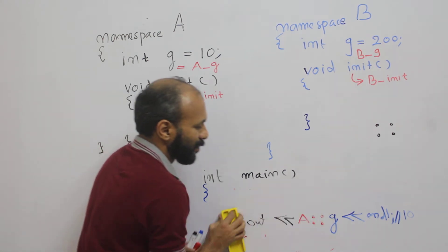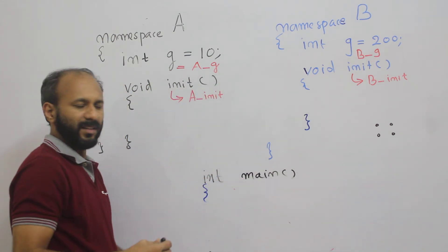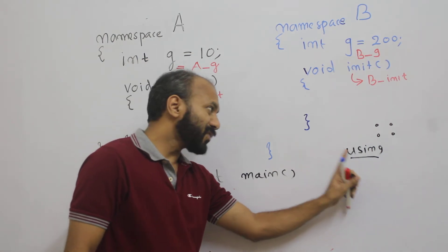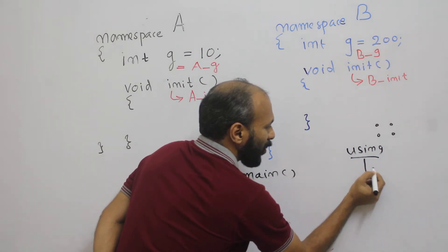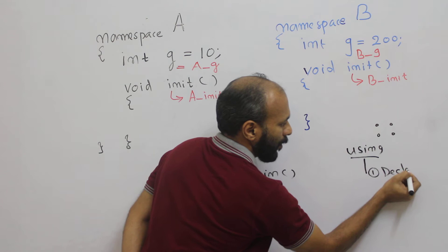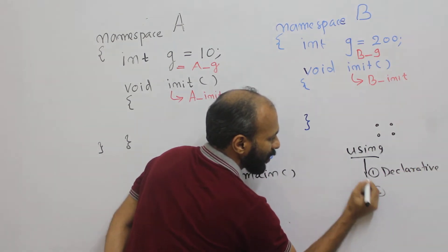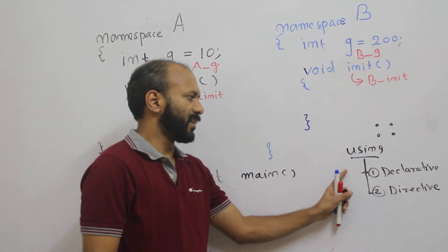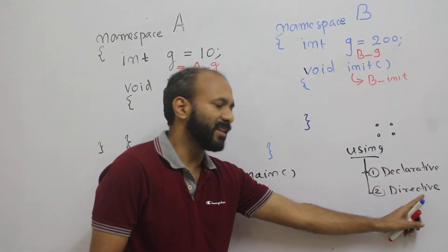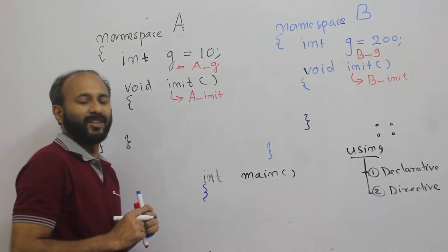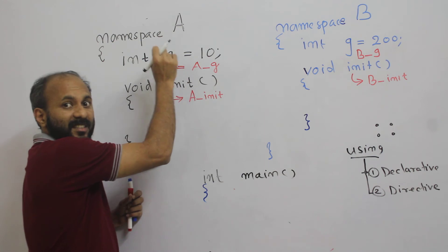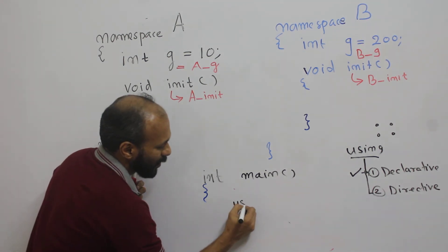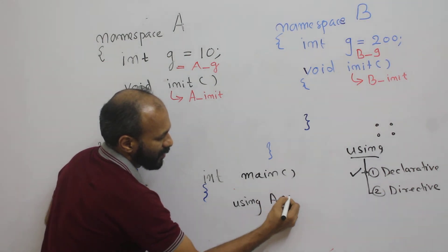Now we can study how we can access the namespace elements with the help of the using keyword. You can use the using keyword in two ways: one is with the declarative method and the other is with the directive method. Let me show you how to write the declarative method. The syntax is: using A::g.